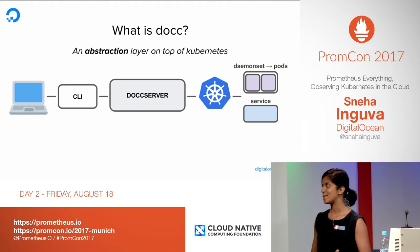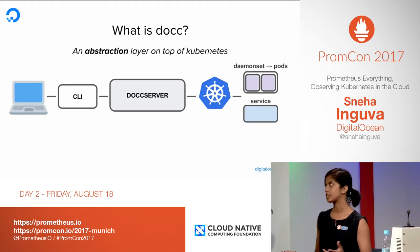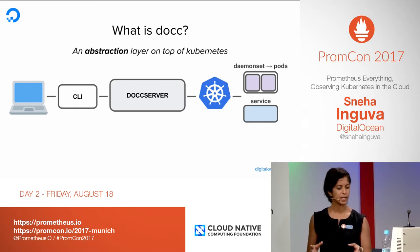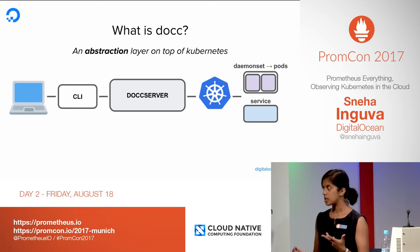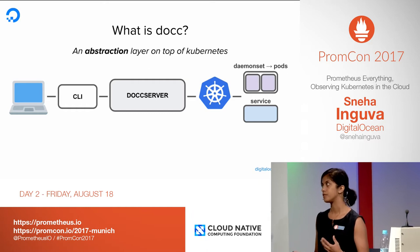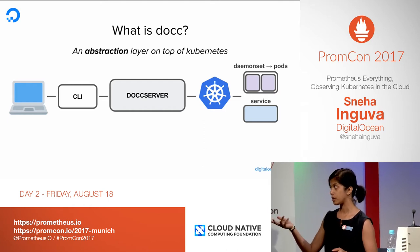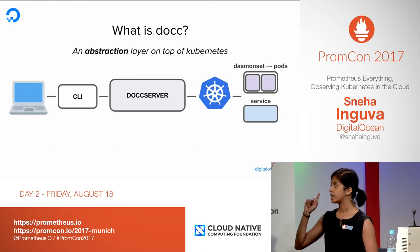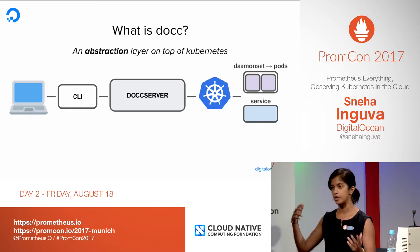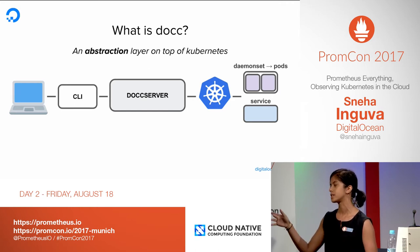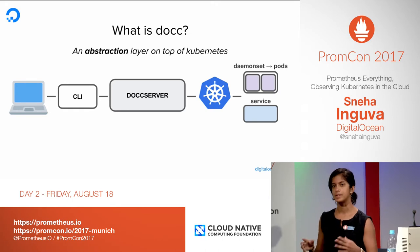DOCC is what my colleagues and I chose to build — an abstraction layer on top of Kubernetes. We decided to go with this to expose only a subset of features to our end users, and to give us the ability to add certain features as well. DOCC is basically a command line interface that users use to communicate with the DOCC server, which leverages the Kubernetes API and creates pods by creating a daemon set, as well as a service primitive, which is a way to group pods together.